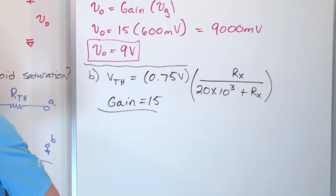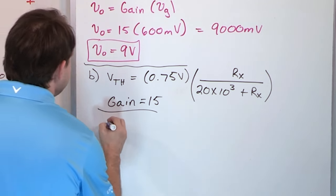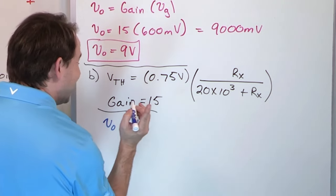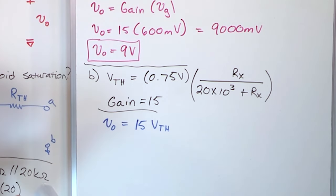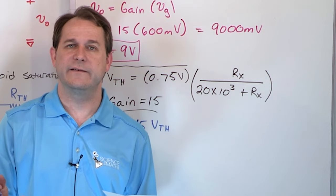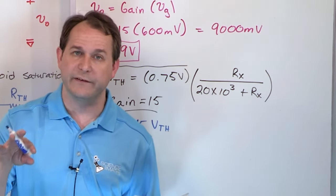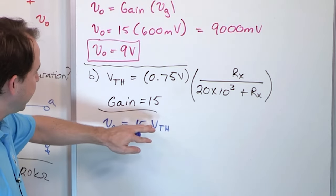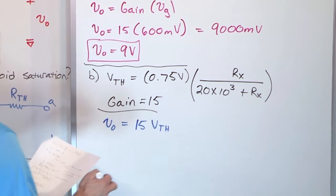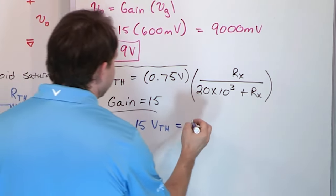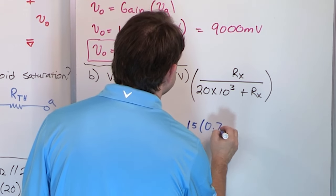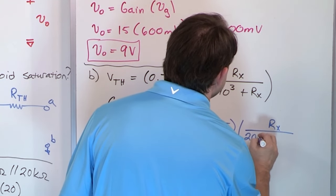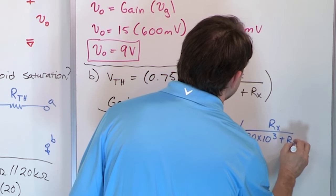Let's write an equation for the output. The output equals 15 times the Thevenin equivalent voltage — we don't use 750 millivolts, because 750 is not the effective input voltage. It's going to be the Thevenin equivalent voltage of the resistor network as we allow R_X to change. So the output equals 15 times 0.75 times R_X over (20 × 10³ + R_X).